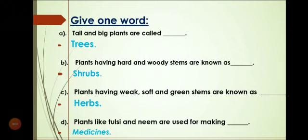Give one word. Number A: Tall and big plants are called Trees — T-R-E-E-S, Trees. Now again: Tall and big plants are called Trees.